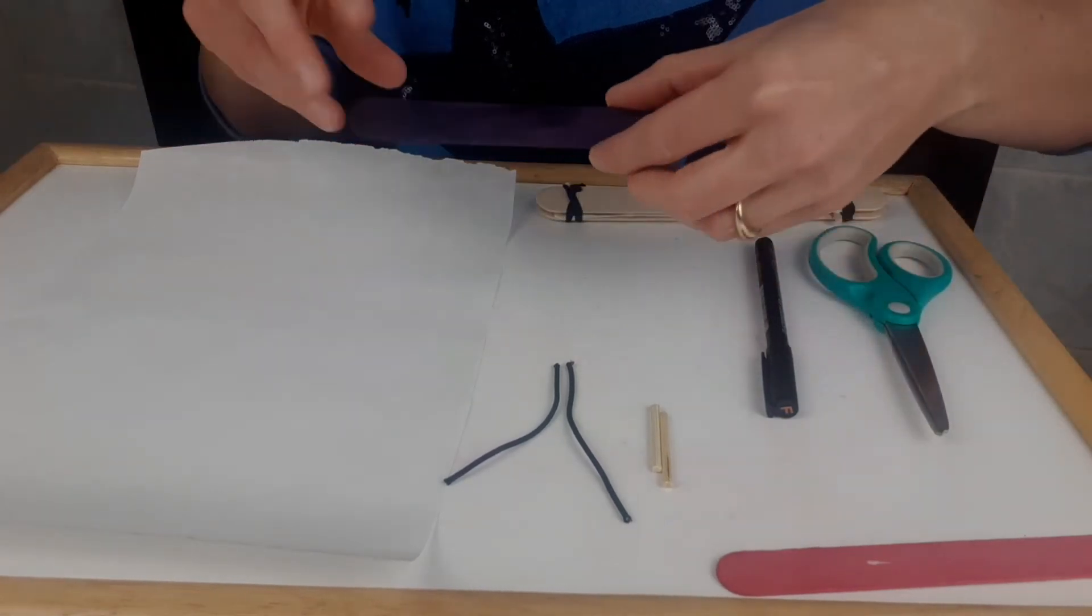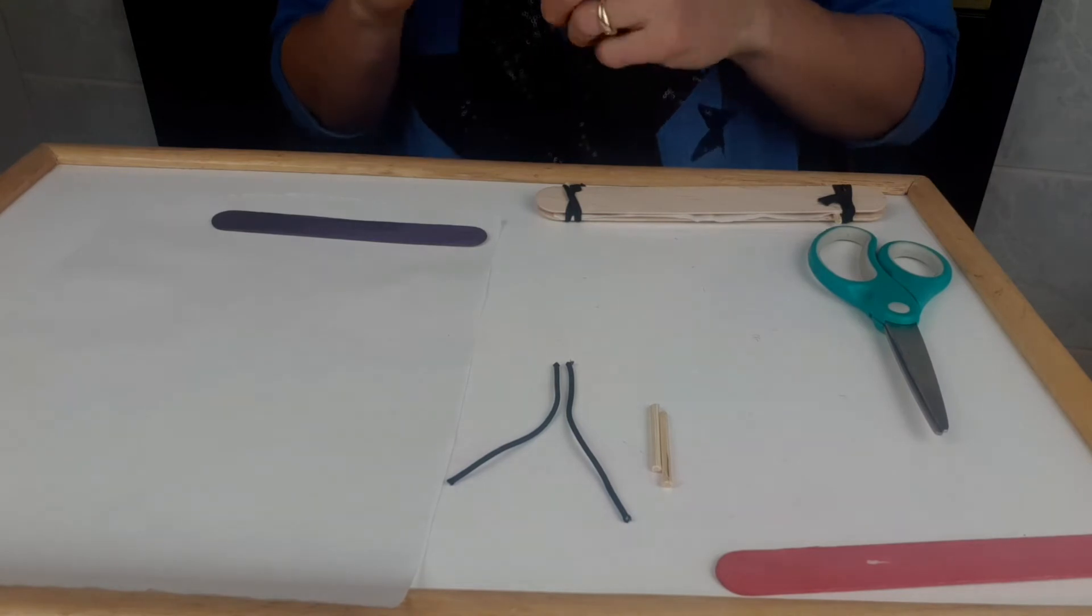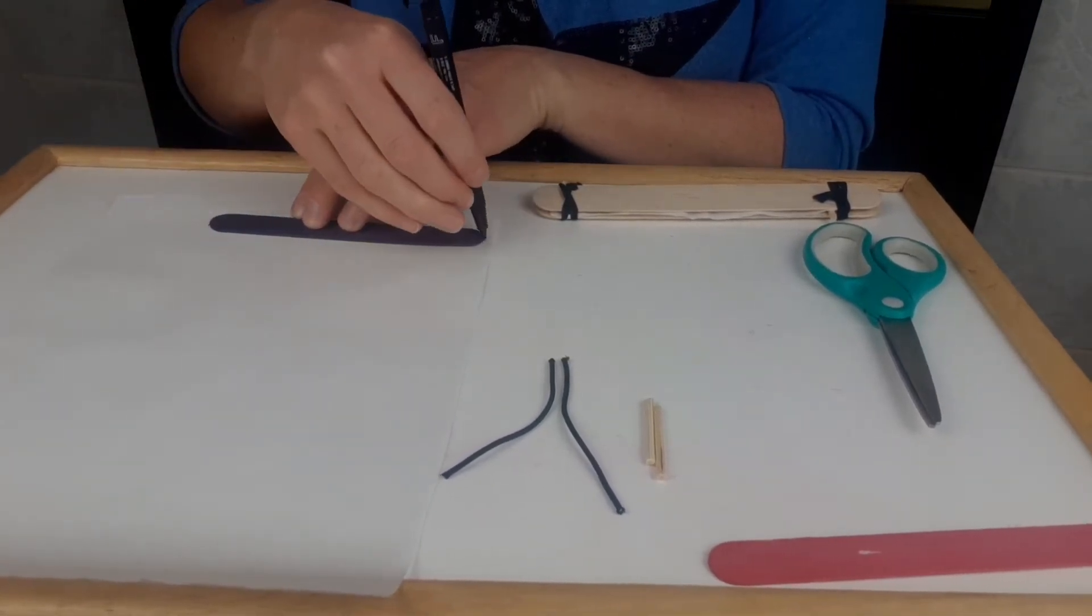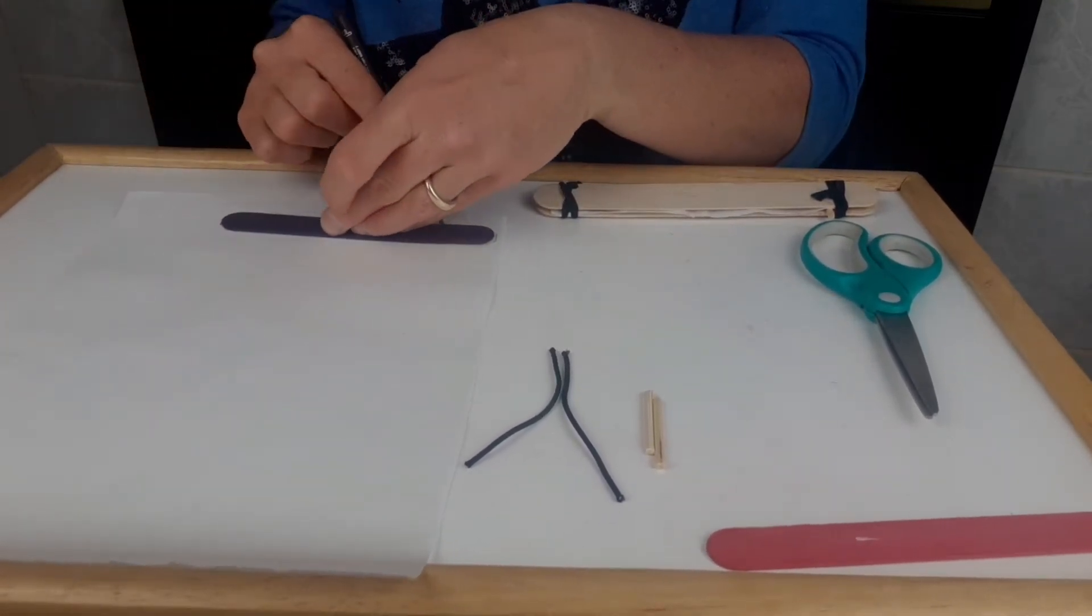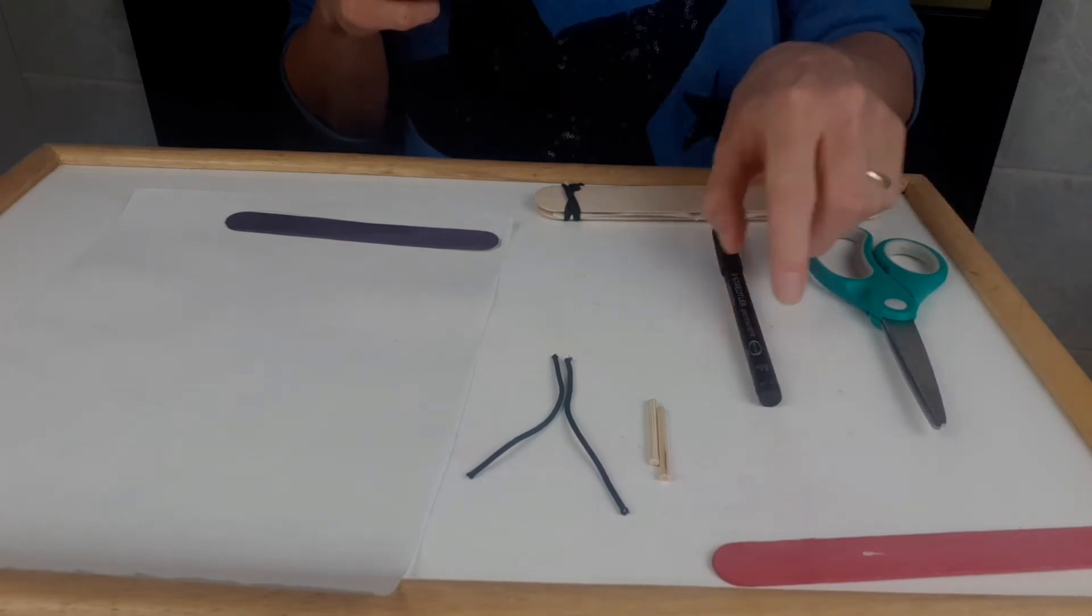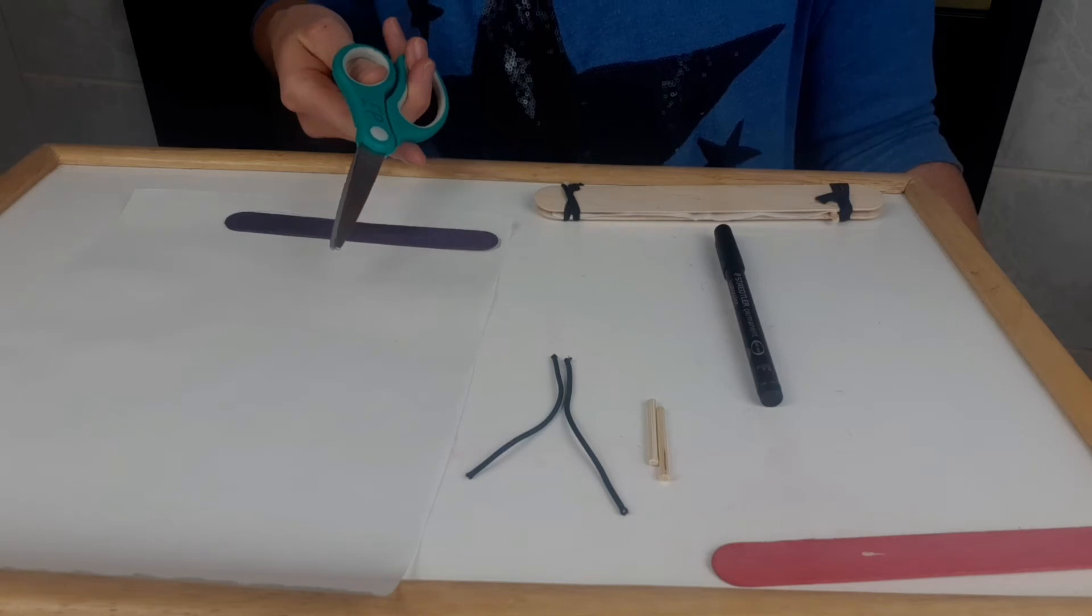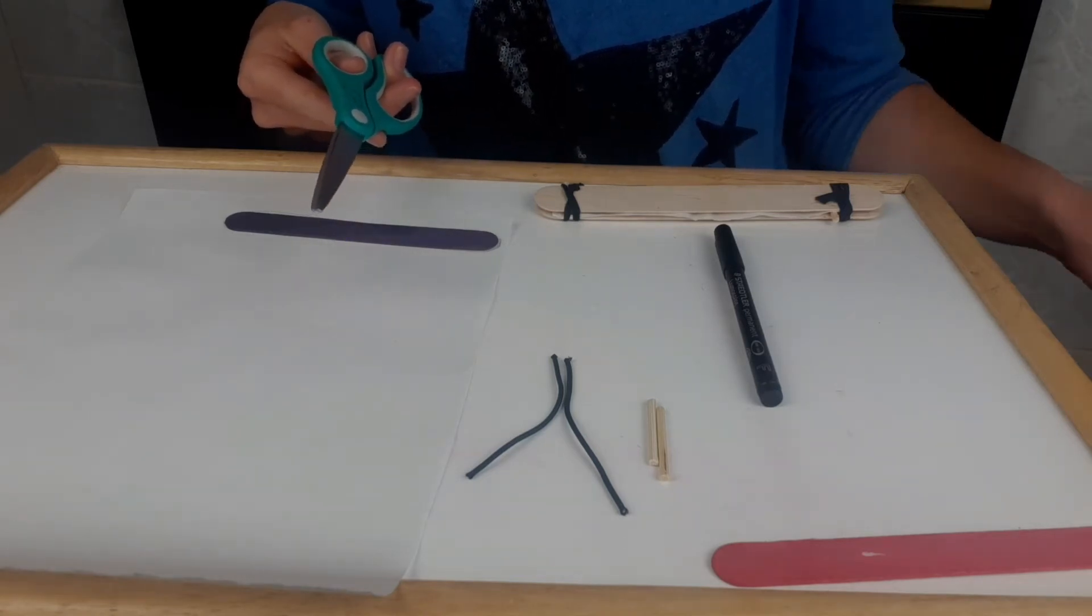First, let's take one of our popsicle sticks and put it on our paper. This is going to require a little bit of measuring, so you can make a little mark on each side, going all the way around. This lets us know how big our paper needs to be. Using our scissors, we can now cut out a piece of paper about the same size as our popsicle sticks.